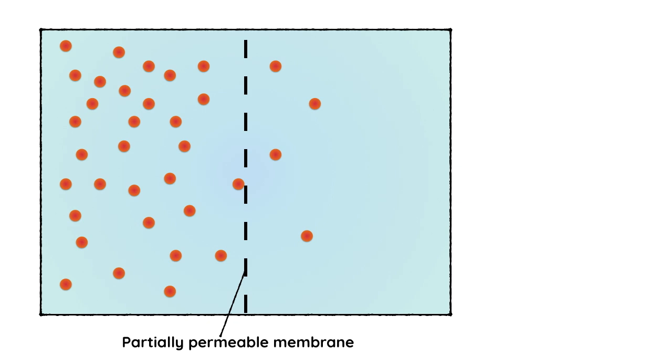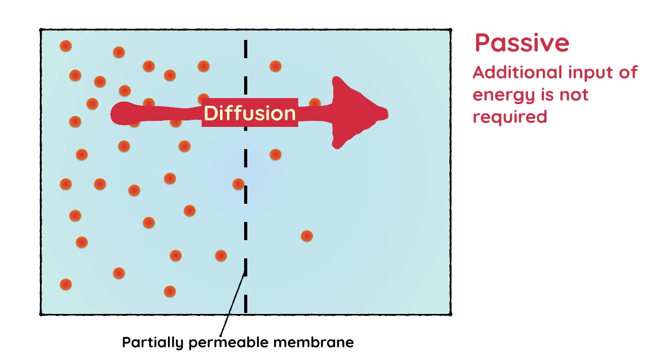You'll probably already know that if we have a situation where there is lots of something on one side of a membrane and less of it on the other, there is the possibility for diffusion to take place. Diffusion is a passive process because an additional input of energy is not required. This is what we mean by passive.